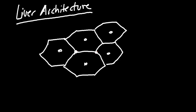Let's talk about liver architecture. The liver has a very unique architecture, and owing to that architecture is its function — so function and architecture are nicely related. The liver has a cellular honeycomb matrix with a hexagonal appearance, six sides. At each corner of this hexagon you're going to have a portal triad.